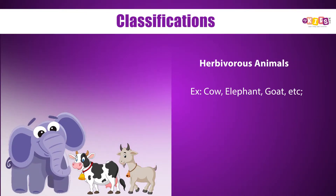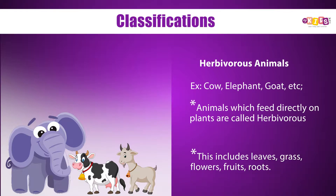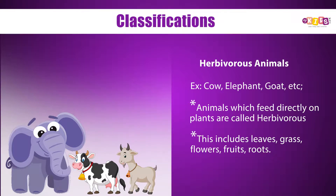Herbivorous animals: Animals which feed directly on plants are called herbivorous. This includes leaves, grass, flowers, fruits, and roots.